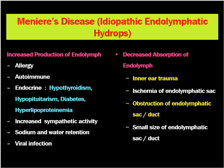Increased production of endolymph may be due to allergy, certain allergens, inflammation, and increased autoimmune conditions. Endocrine conditions like hypothyroidism, hypopituitarism, diabetes, and hypolipoproteinemia can all lead to increased production of endolymph. Increased sympathetic activity, sodium and water retention, and viral infections — usually mumps, measles — may also lead to excess endolymph production.